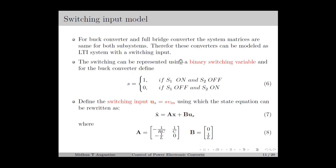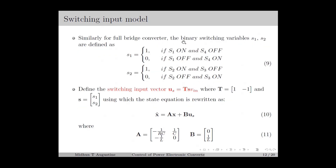The switching input model is in the form of a linear time-invariant (LTI) system with a switching input. For the buck converter, we have two independent switch configurations. We define a binary switching variable S as in equation number 6. Using this binary switching variable, we define the switching input Us as S·VIN, where the switching input takes the value of either 0 or VIN based on the switch configuration. Using the switching input, we rewrite the state equation for the buck converter as equation number 7, where A and B are as in equation number 8.